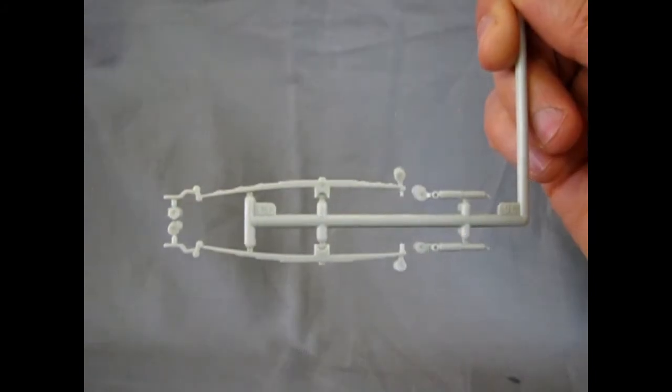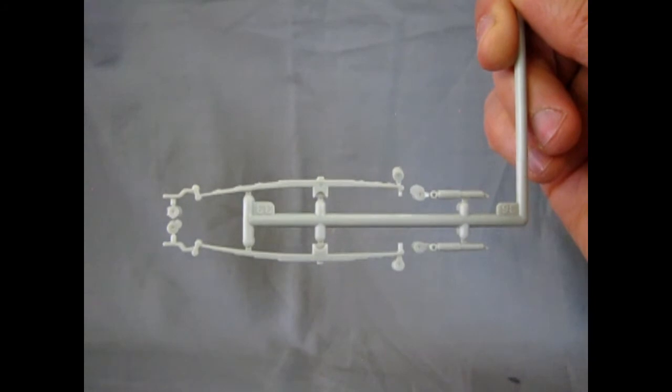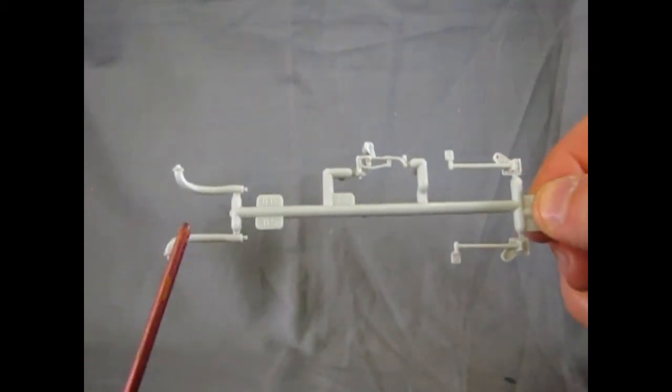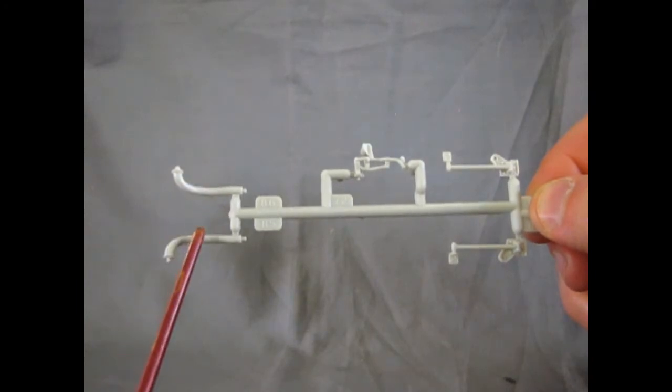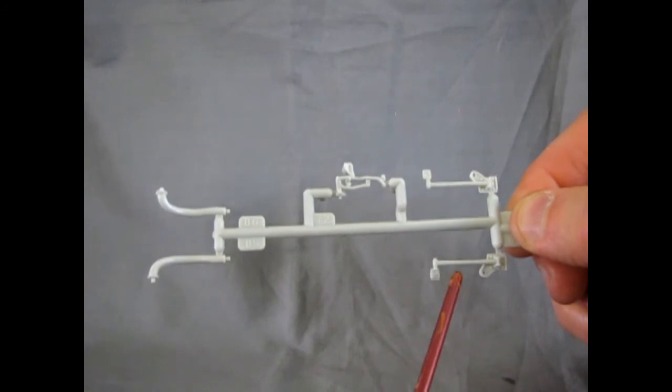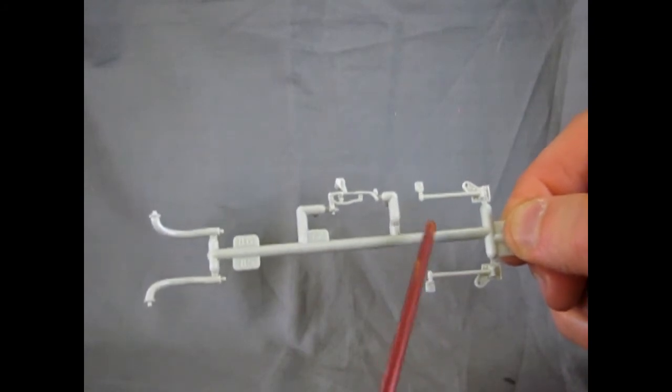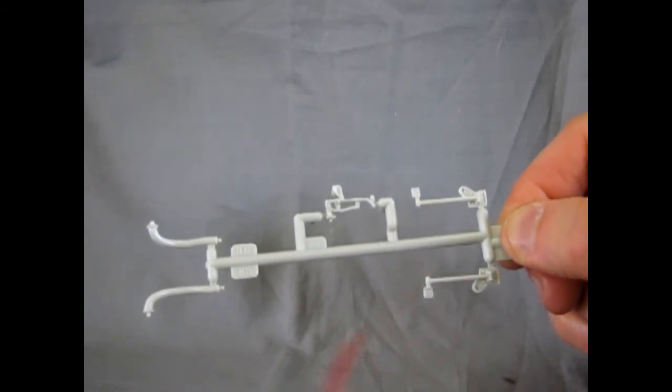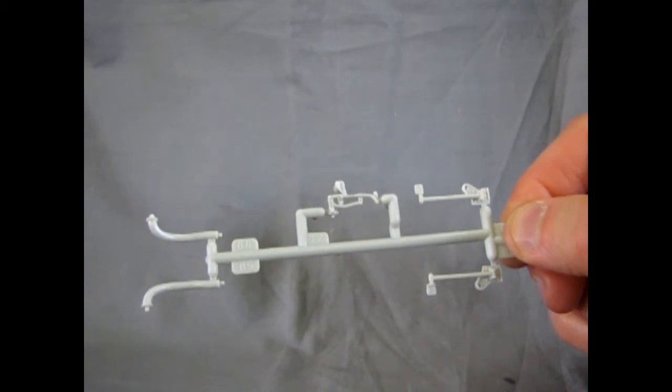This sprue contains the springs and shock absorbers for the rear. This sprue contains the exhaust to the rear mufflers, the shift linkage for the transmission, and the stabilizers or shock absorber spring things for the rear axle.